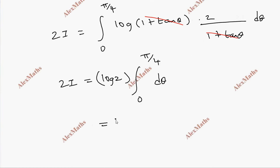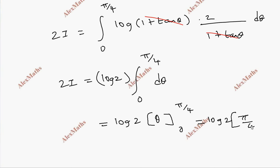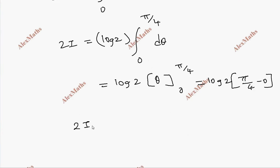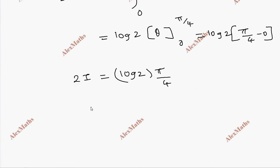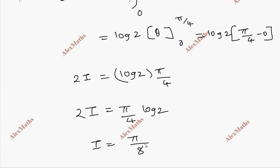The integration of dθ is θ. Substituting the upper and lower limits: 2I equals log 2 times (π/4 minus 0), so 2I equals π/4 times log 2. Therefore I equals π/8 log 2.